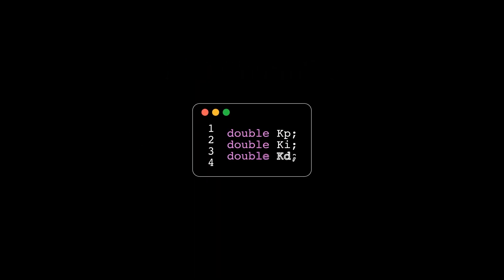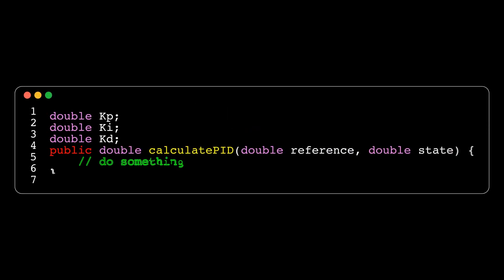When designing our PID controller in software, we will first define our three coefficients. These are weighting factors that affect the control output.